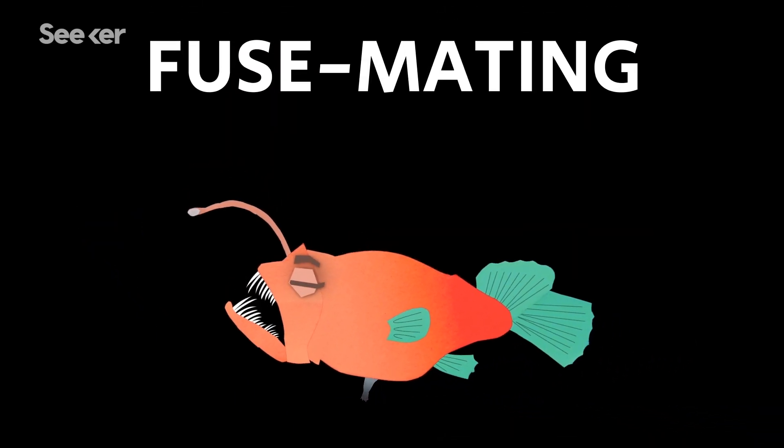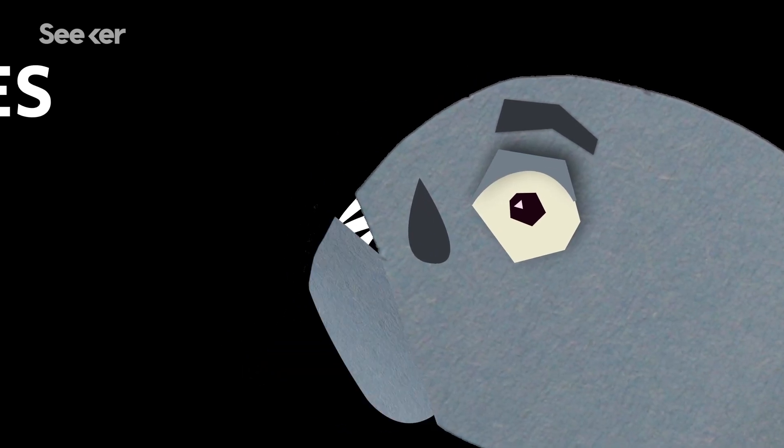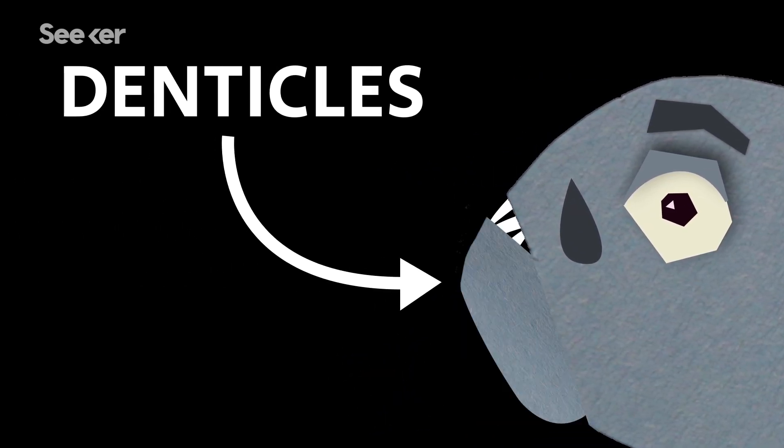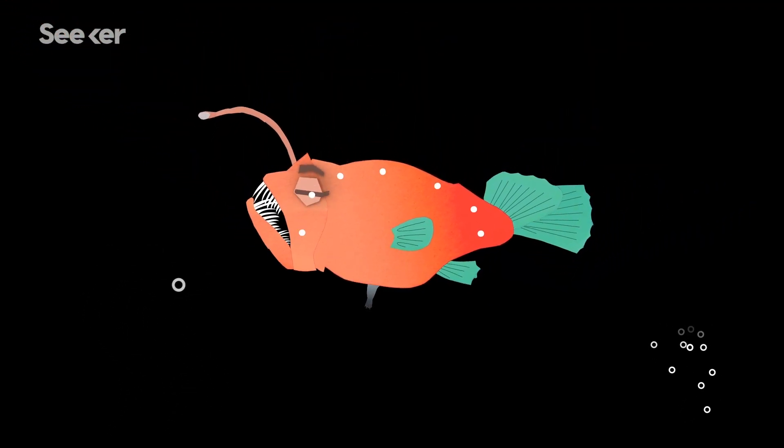They do this by fuse mating, aka sexual parasitism. Males use their specialized hooked teeth to latch onto the female, and then they release an enzyme that dissolves the skin between them. This gives males direct access to a female's digestive system for nutrition and to her circulatory system for gas exchange.